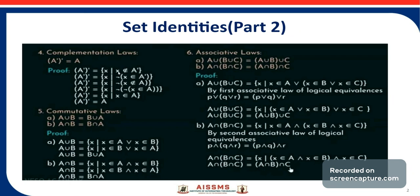X does not belong to A complement is the negation of X belongs to A complement. Afterwards, negation of X belongs to A complement is nothing but the negation of X does not belong to A. By double negation, X belongs to A. Therefore, A complement complement equals A. This is the complementation law.